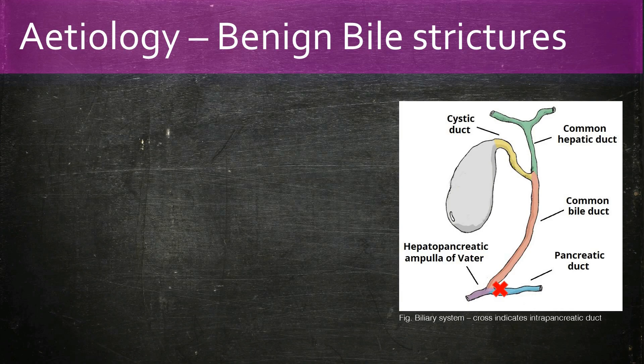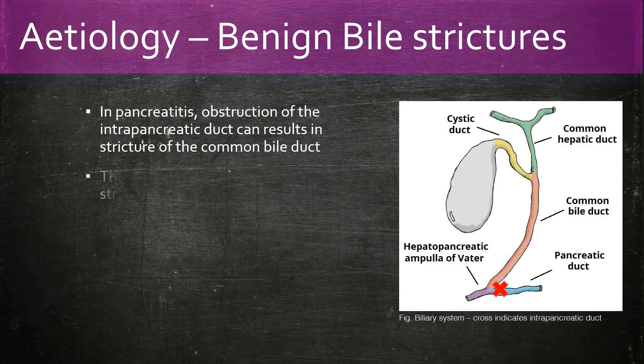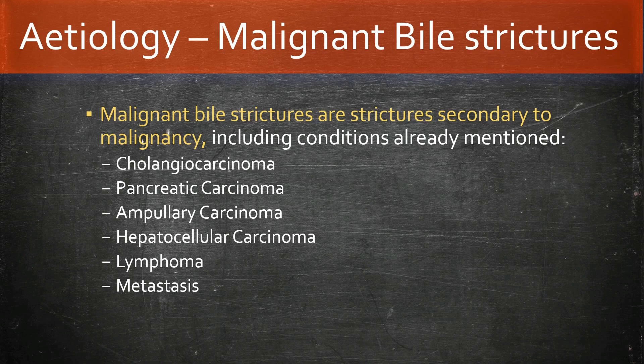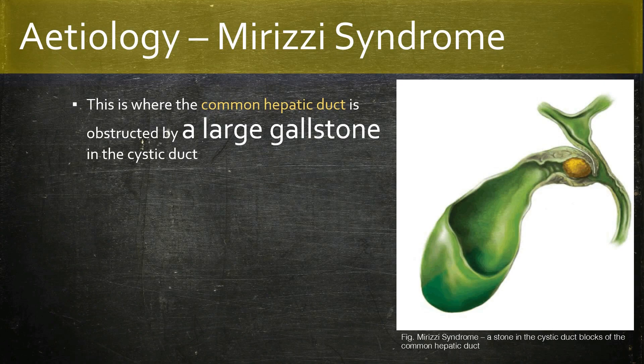Pancreatitis can also result in bile strictures, accounting for 10% of them. Malignant bile strictures are secondary to malignancy and include the conditions already mentioned. Mirizzi syndrome is where a stone in the cystic duct is large enough to obstruct the common hepatic duct.